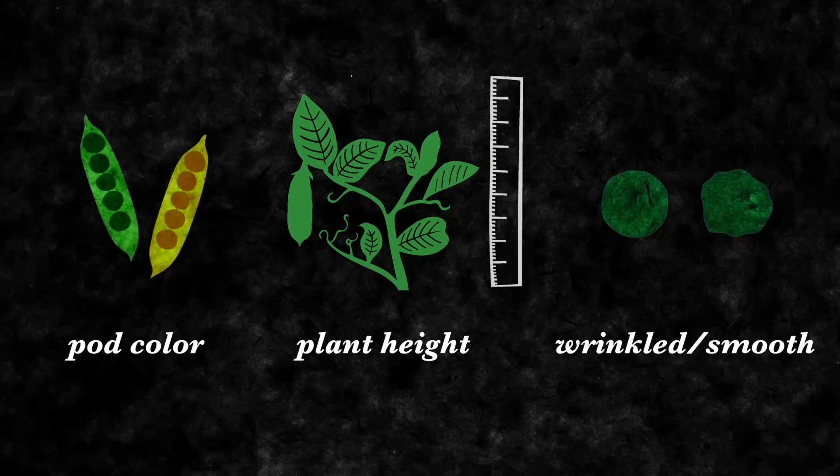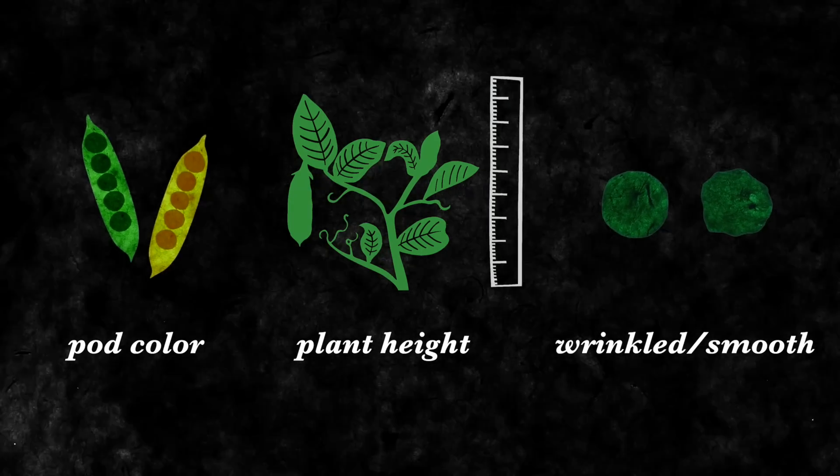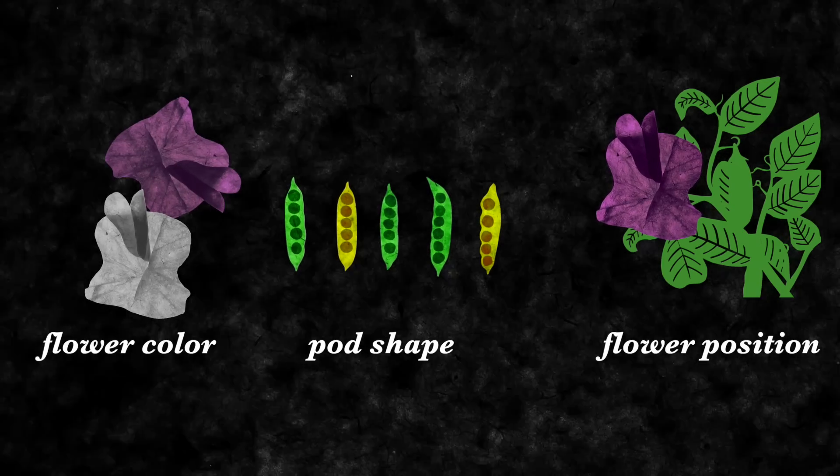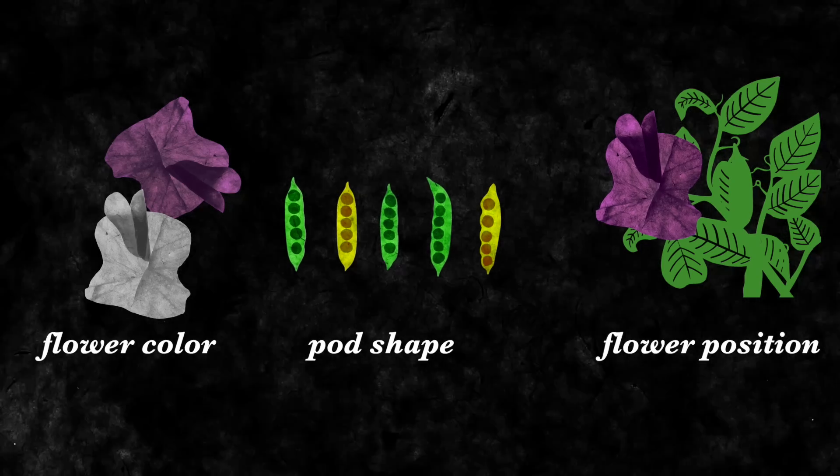Mendel performed more experiments focusing on different traits, and in each of these, the dominating form seemed to appear at a ratio of 3 to 1 in the second generation.